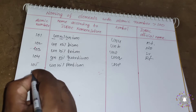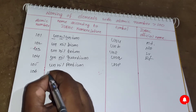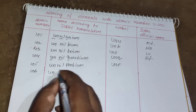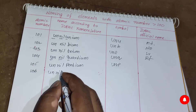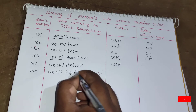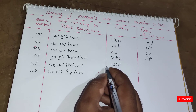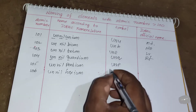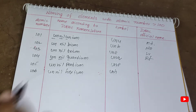For element 106: 1 = un, 0 = nil, 6 = hex, plus '-ium' gives Unnilhexium. The symbol is Unh.